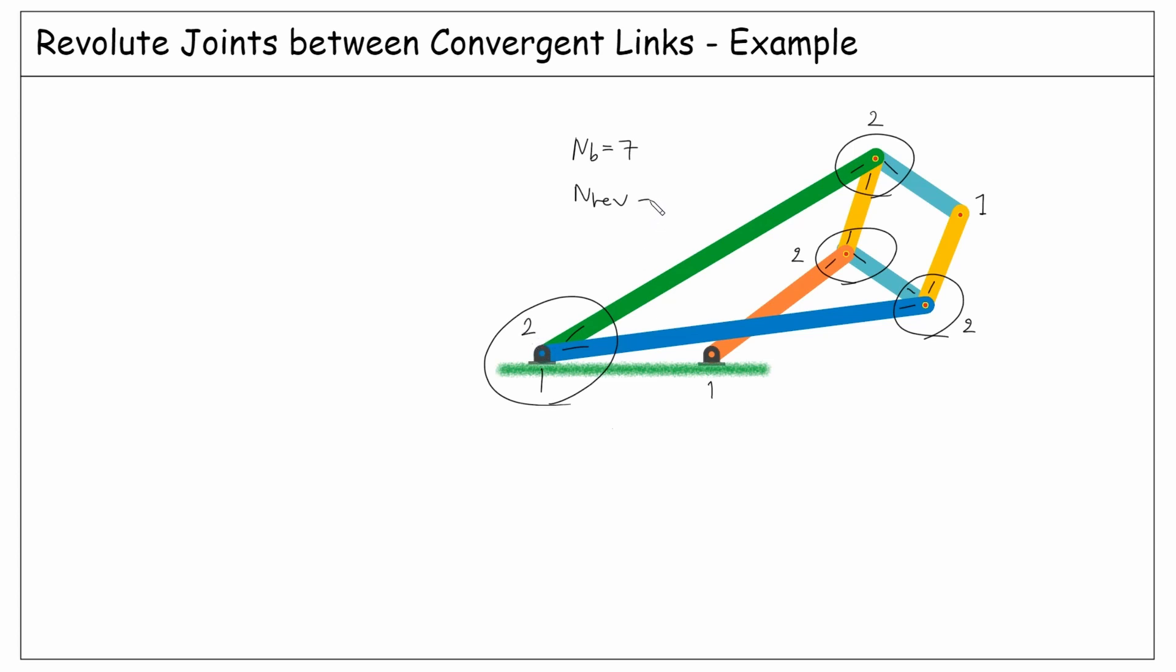Therefore, as you see, j1 is 10 and the degrees of freedom is three times seven bodies minus two times 10. So one degree of freedom for the system.